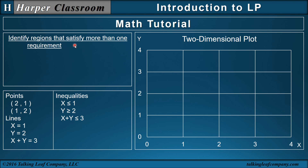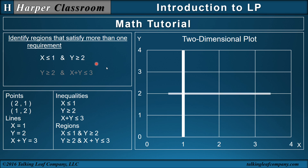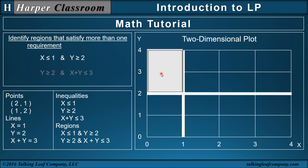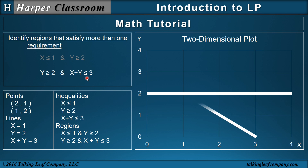I can also identify regions that satisfy more than one requirement. For example, x is less than or equal to 1 and y is greater than or equal to 2 — what region of points will satisfy both simultaneously? x less than or equal to 1 is everything to the left of this line; y greater than or equal to 2 is everything above this line. So this region of points right here will satisfy both simultaneously. What about y greater than or equal to 2 and x plus y less than or equal to 3? That region of points will satisfy both of these inequalities simultaneously.